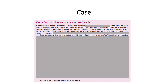A 54-year-old woman with a remote history of Hodgkin's lymphoma is admitted to the hospital with progressive shortness of breath over the past few months. She also describes an enlarging abdomen and bilateral lower extremity swelling, and has gained 20 pounds since these symptoms began. The patient is an avid bicyclist but has been forced to give it up in recent weeks because she can no longer keep up. The lymphoma has been in remission since treatment without evidence of recurrence. There is symmetric distension of the abdomen with bulging flanks and the presence of shifting dullness to percussion. What is the most likely cause of ascites in this patient?